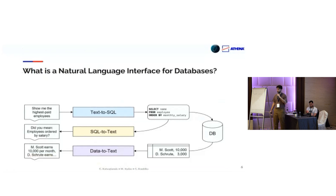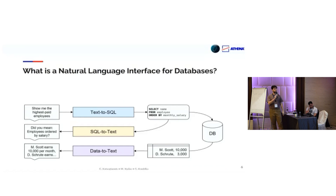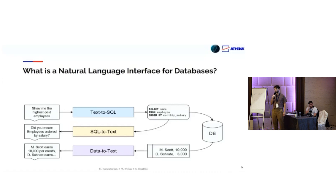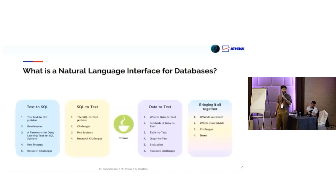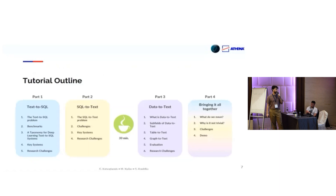This is the framework of today's tutorial. We will be talking about three different types of systems. First, we have text-to-SQL systems where the user can ask a question in natural language and their question can be translated to SQL. Then we have SQL-to-text systems that allow the user to understand the produced SQL query and verify that the prediction of the text-to-SQL system was correct. When they have verified this prediction, the query can be executed on the database. And then we have data-to-text systems that take the data output and verbalize it back to natural language so that the user gets a complete natural language experience.